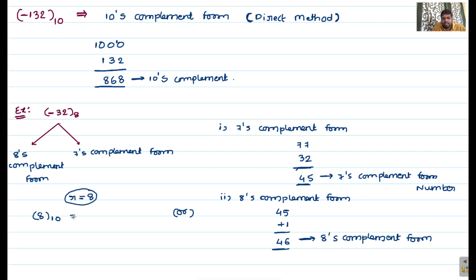For the direct method of 8's complement: since r equals 8, and decimal 8 equals 10 in octal, we take 100 in octal. We subtract 32 from 100 in octal. When subtracting from the units digit, 0 minus 2 is not possible, so we borrow — and in octal, a borrowed unit gives 8, not 10 as in decimal.